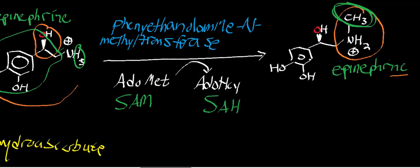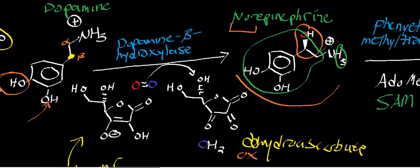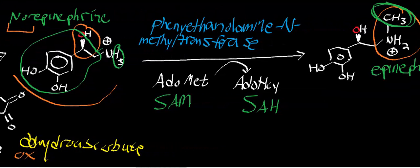Let's think about what type of cells might express phenylethanolamine N-methyltransferase. A cell wanting to synthesize norepinephrine would not express this enzyme. As you go further in this pathway, the number of cells actually expressing these enzymes gets thinner and thinner. The locus coeruleus synthesizing and releasing norepinephrine would not make phenylethanolamine N-methyltransferase. But the adrenal medulla — specifically the chromaffin cells, which release epinephrine — would make a large amount of this enzyme. There are also a few nuclei in the brainstem that make epinephrine, but the main producer is the chromaffin cells of the adrenal medulla.